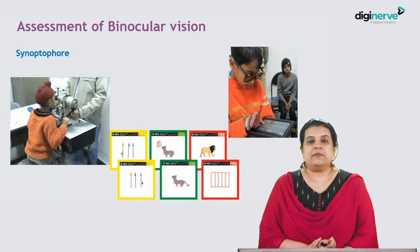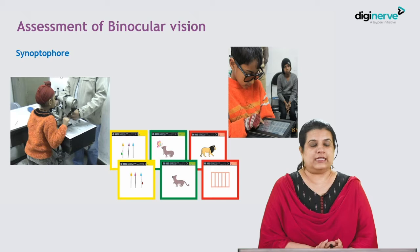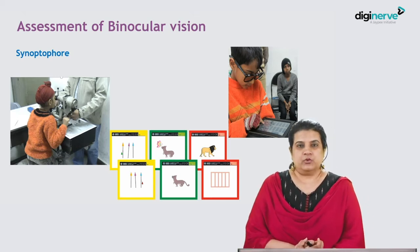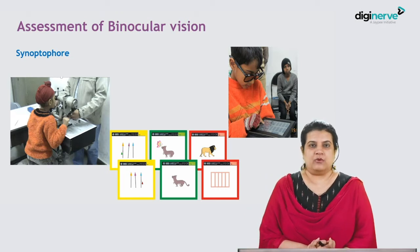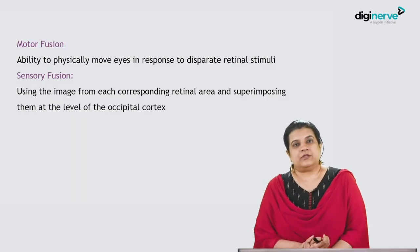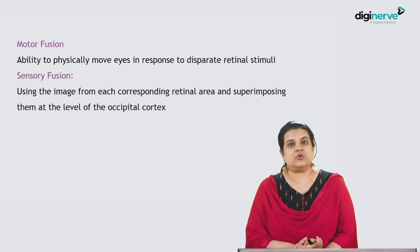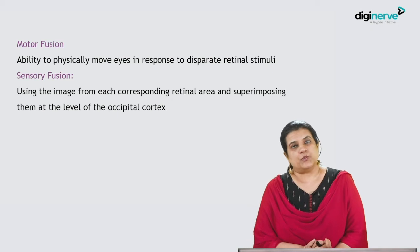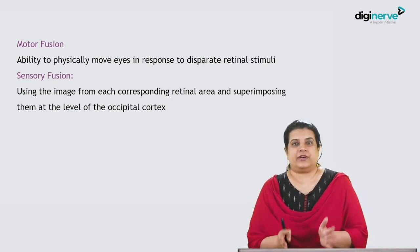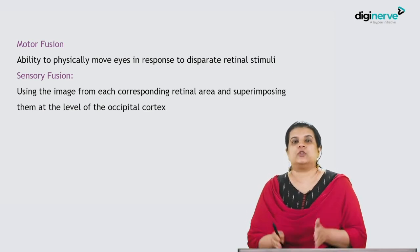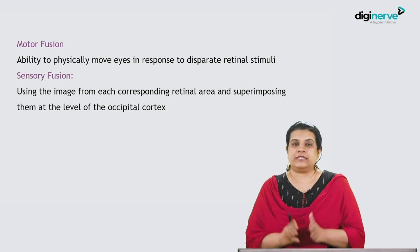Binocular vision can be assessed using a synoptophore, or certain tests such as the Titmus fly test, which can be used to evaluate the amount of stereopsis or binocular vision a child or individual has. There are two more concepts: motor fusion and sensory fusion. Motor fusion refers to the ability to physically move the eyes in response to disparate retinal stimuli, and sensory fusion refers to using the image from each corresponding retinal area and superimposing them at the level of the occipital cortex or visual cortex.